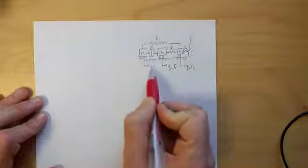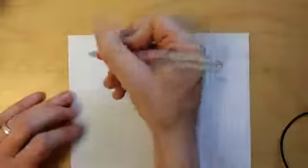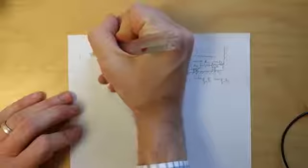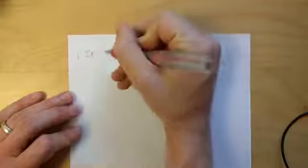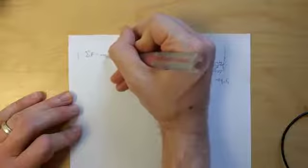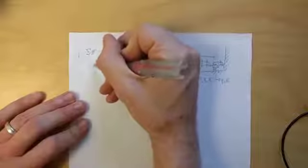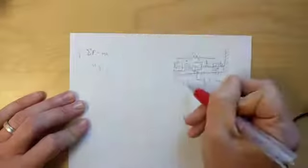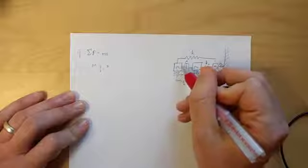Starting with our first degree of freedom Q1, we can write for Q1, the sum of the forces is equal to the mass times acceleration of Q1. In other words, mass 1, which is the mass of Q1 times Q1 double dot, is equal to all of the forces that act on this mass.